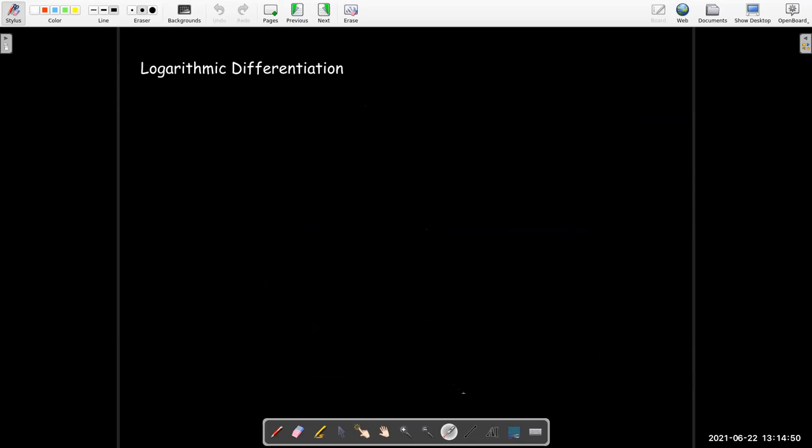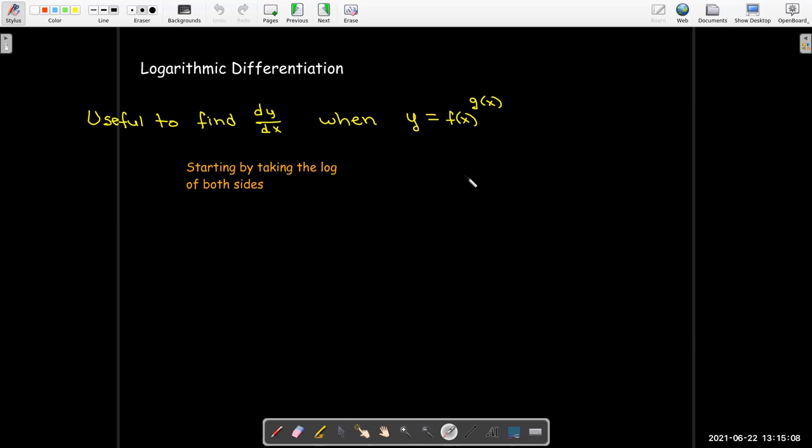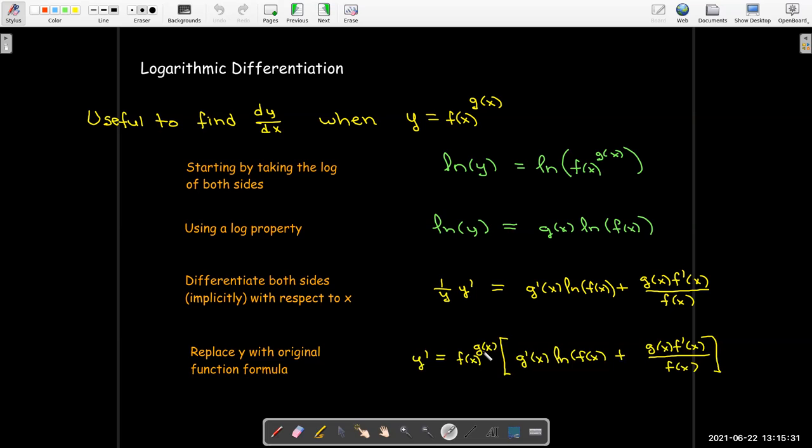So what were the steps that we used? So this is a useful technique. I say when we have this type of function, but we're going to see an example where the process is useful to help solve other problems as well. And what is the process? Well, we start by taking the log of both sides. And then we use a log property to bring the exponent out in front as a multiplier. Then we take the derivative implicitly on the left, explicitly on the right, multiply both sides by y, and replace y with the original formula.